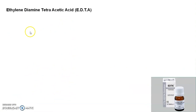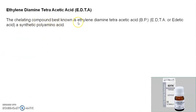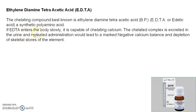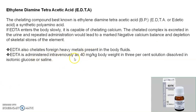The second major antidote is ethylenediaminetetraacetic acid, that is EDTA, which is used as a chelating agent. It is the best known chelating compound — a synthetic polyamino acid also known as edetic acid. If EDTA enters the body slowly, it is capable of chelating calcium ions; the chelated complex is excreted in the urine, and repeated administration leads to a marked negative calcium balance and depletion of skeletal calcium stores. EDTA also chelates foreign heavy metals present in body fluids.